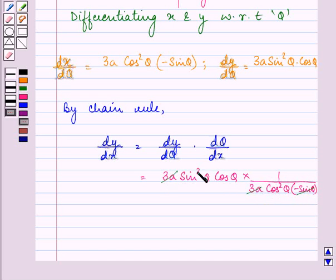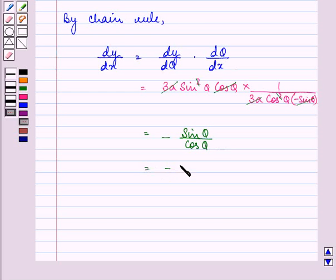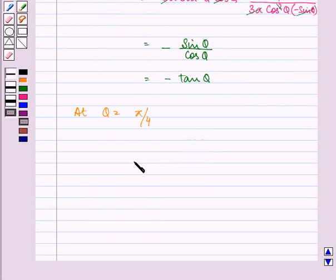Now in simplifying, we have minus sin theta upon cos theta, which can be written as minus tan theta.